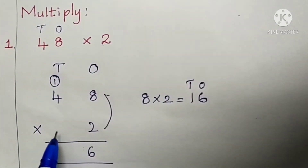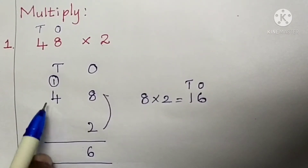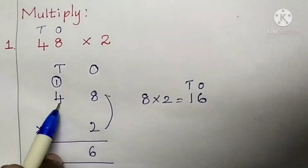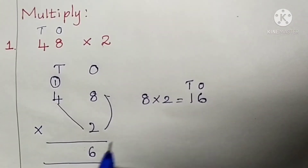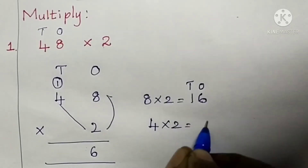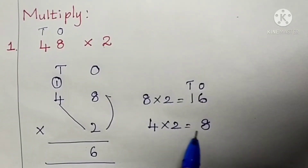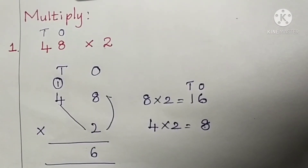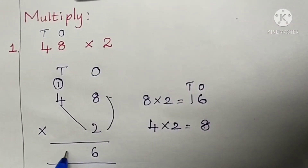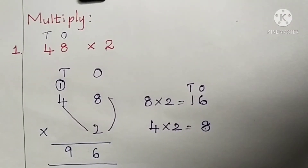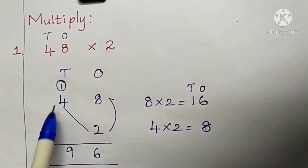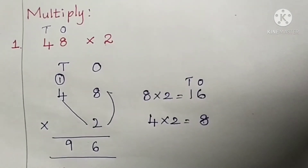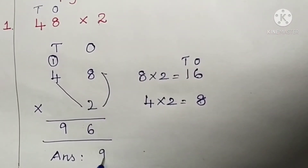Next, multiply the numbers at the tens place by two. Four twos are eight. Add eight plus one — nine. Write nine under the tens place. The product of forty-eight and two is ninety-six. So the answer is ninety-six.